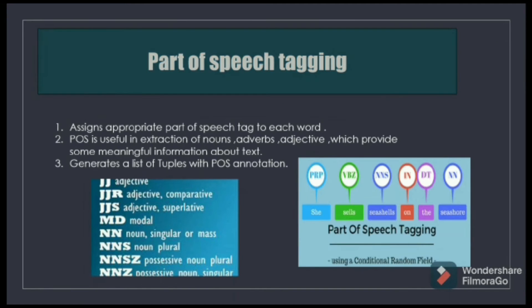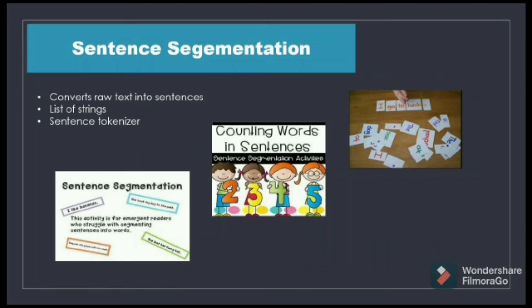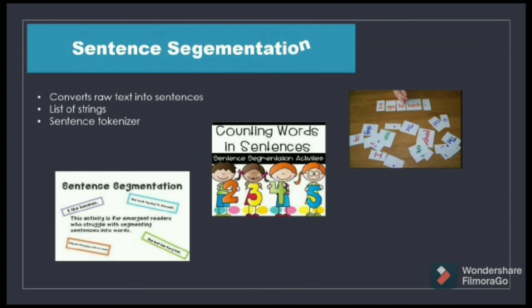Part of Speech Tagging assigns an appropriate Part of Speech tag to each word and generates a list of tuples with POS annotation. Sentence Segmentation converts raw text into sentences, producing a list of strings using a sentence tokenizer.